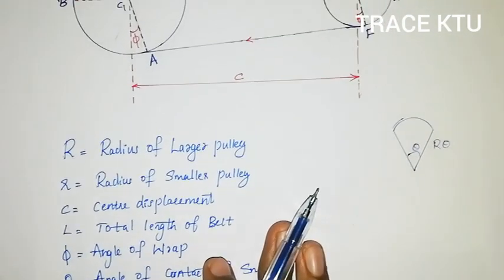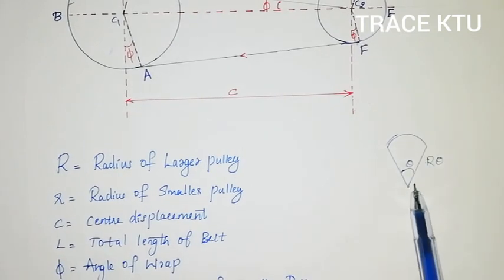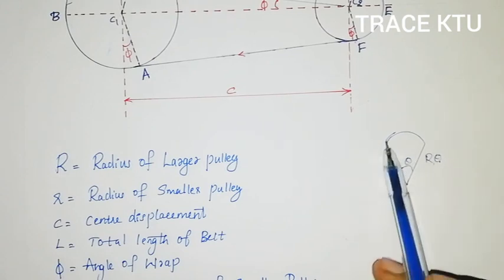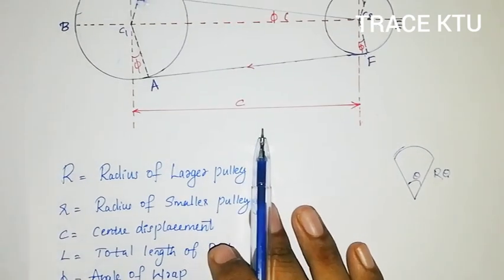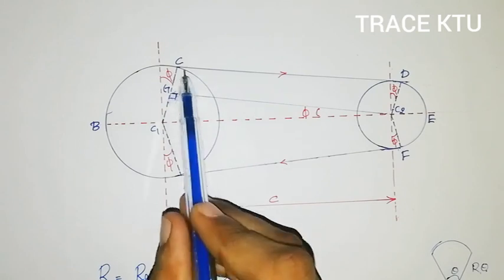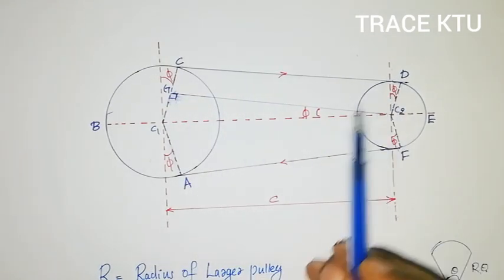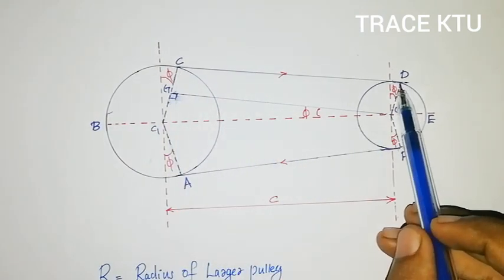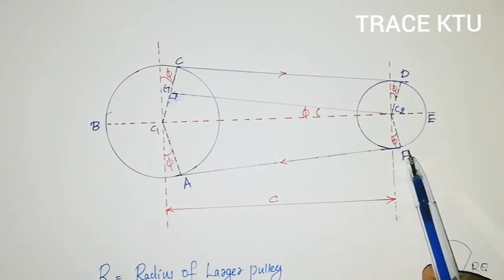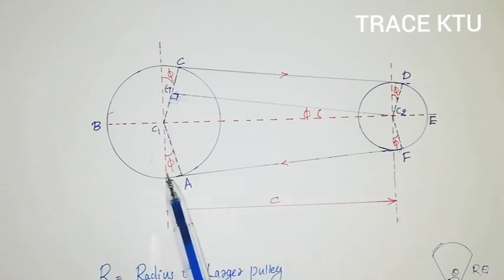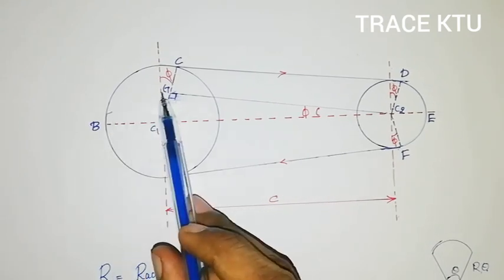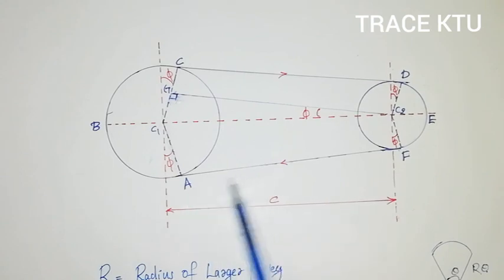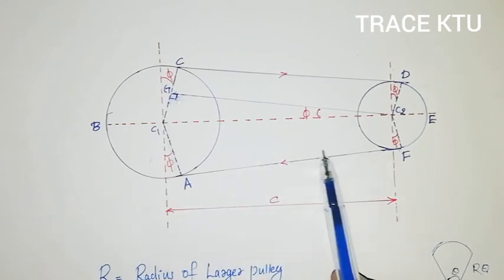We are learning the total length of the belt. The total length L equals arc AB plus arc CD plus straight length CD plus straight length EF plus arc DEF plus arc AF. The arc length is computed using radius times angle. This is the total length comprising all segments.